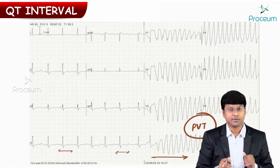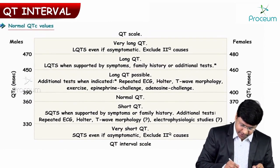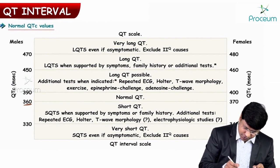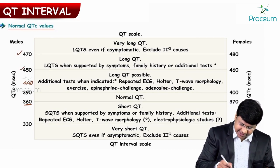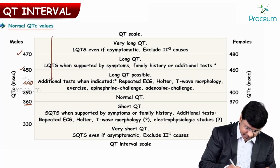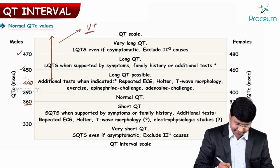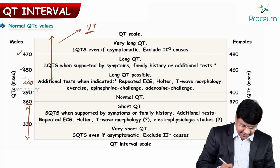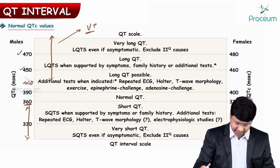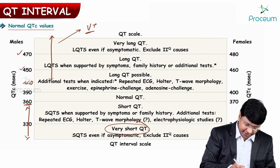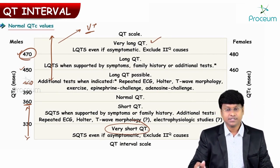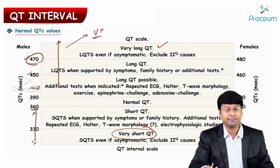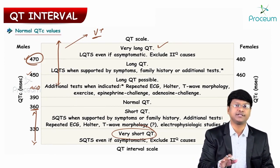Regarding abnormalities of the QT interval: the normal QT interval is from 360 to 440 milliseconds. When QT prolongation is present at 450–470 ms, these patients have a high risk of developing ventricular tachycardia. A short QT interval is less than 360 ms; less than 330 ms is very short. More than 470 ms is very long QT interval. Patients with very long or very short QT interval have high risk of adverse clinical events. This completes the discussion of QT interval abnormalities.